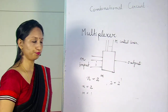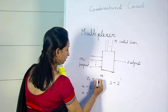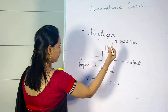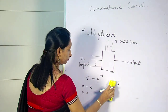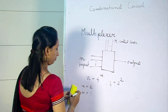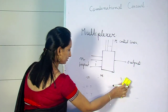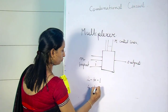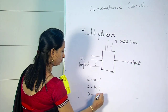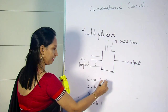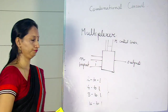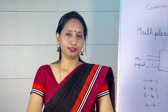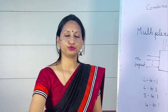If the number of input lines is 2, then the number of control lines m will be 1, because 2 equals 2 to the power 1. If the input is 4, then the number of control lines will be 2, because 2 to the power 2 equals 4. Some examples of multiplexers are 2-to-1, 4-to-1, 8-to-1, and 16-to-1 multiplexers. In a multiplexer, the output is always 1, and the selector inputs determine the output.